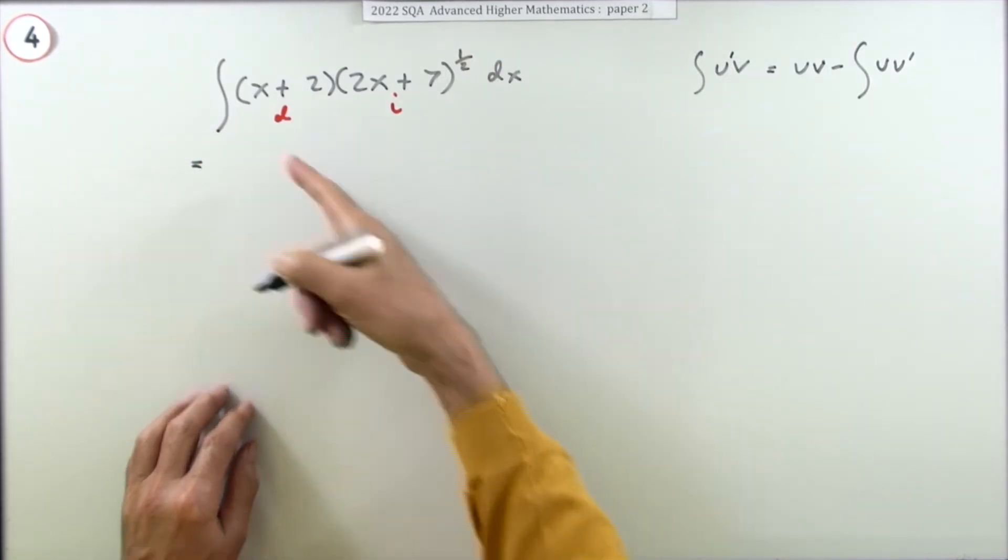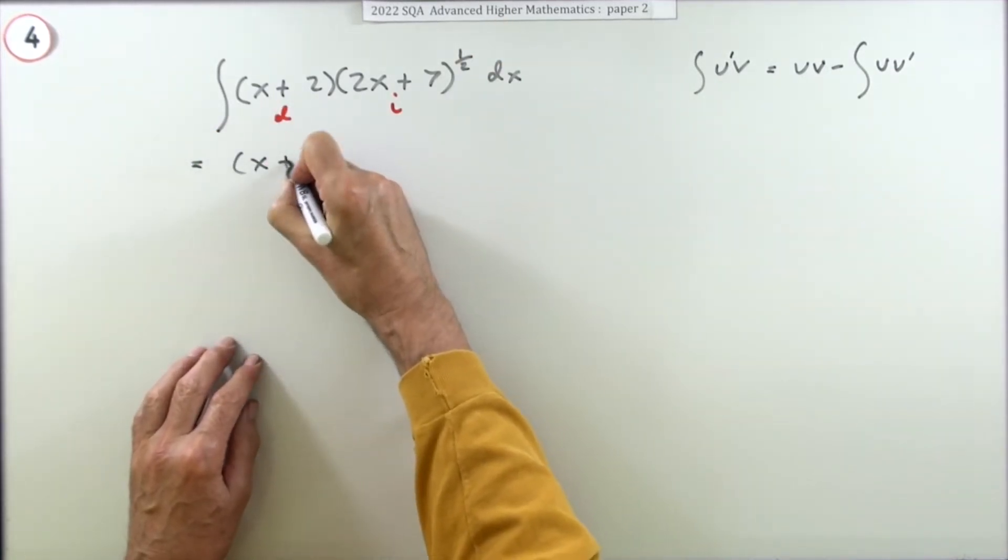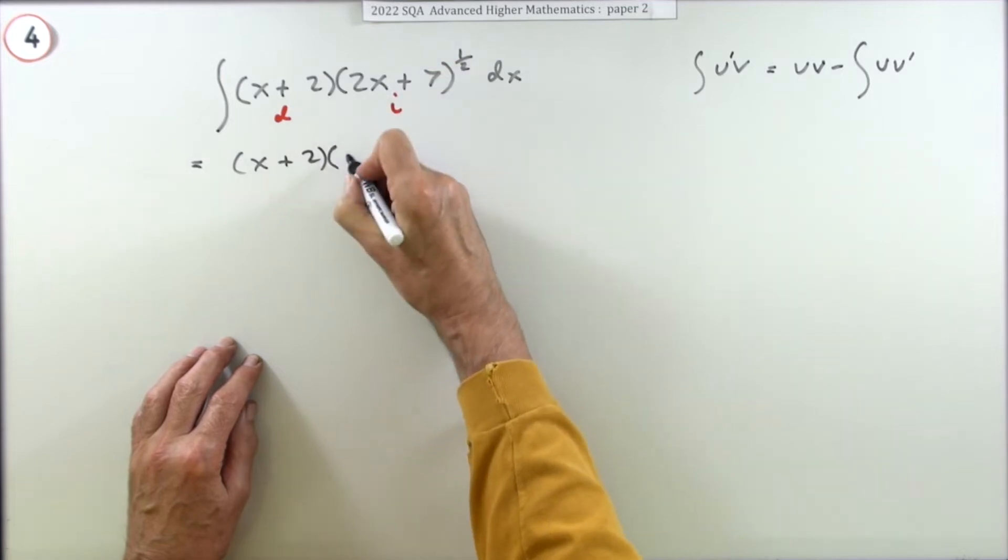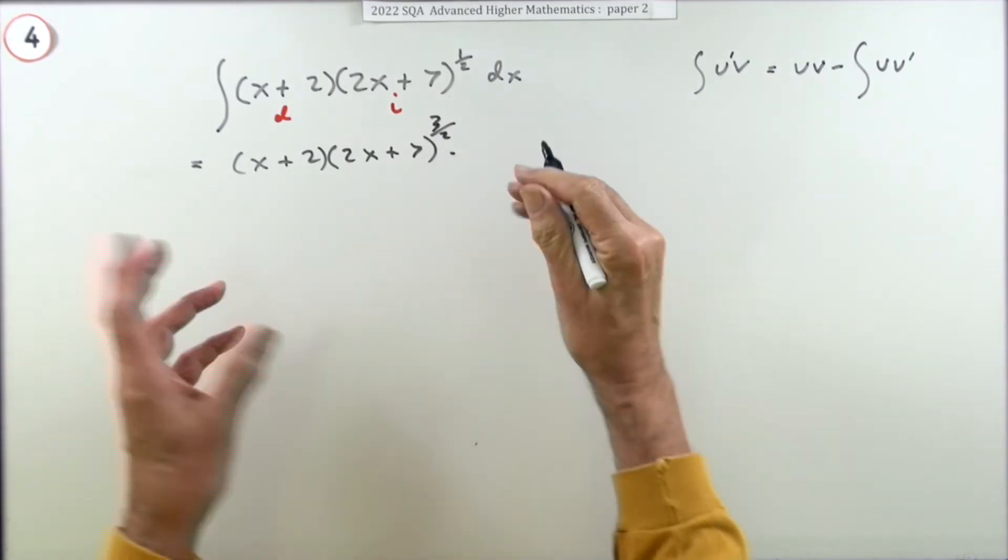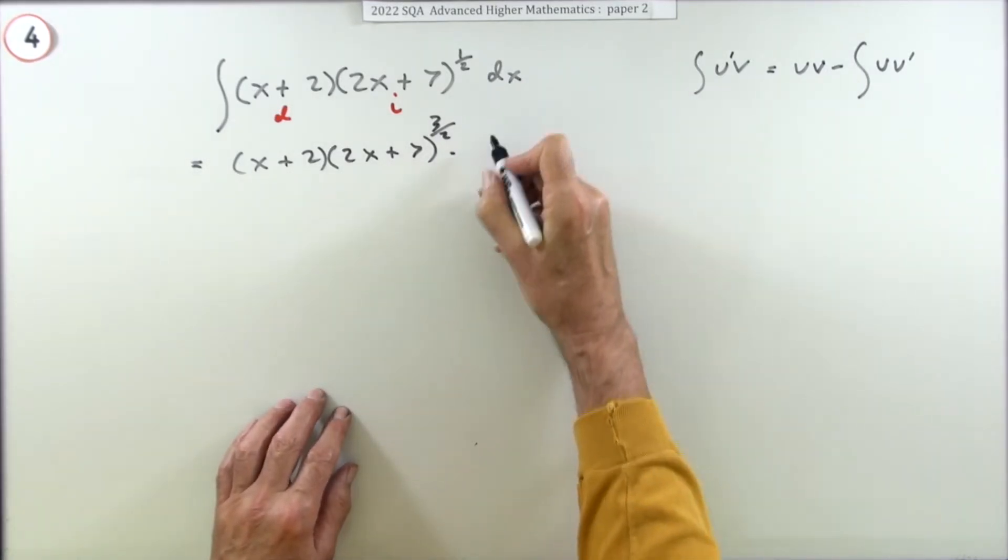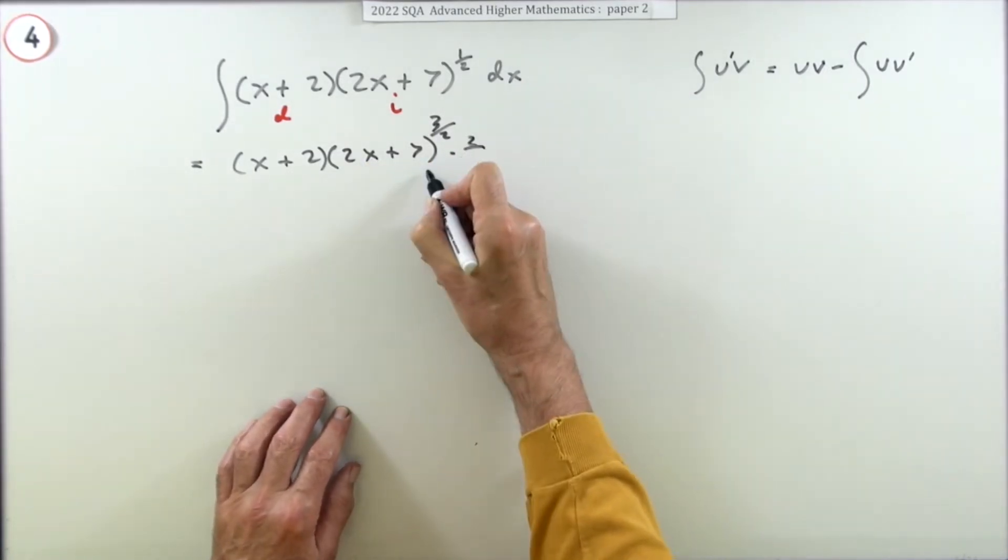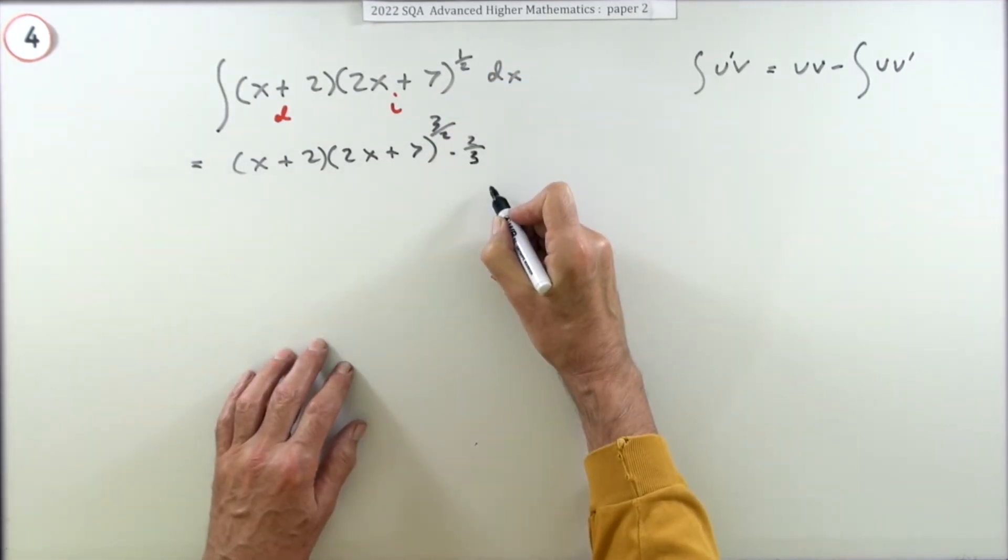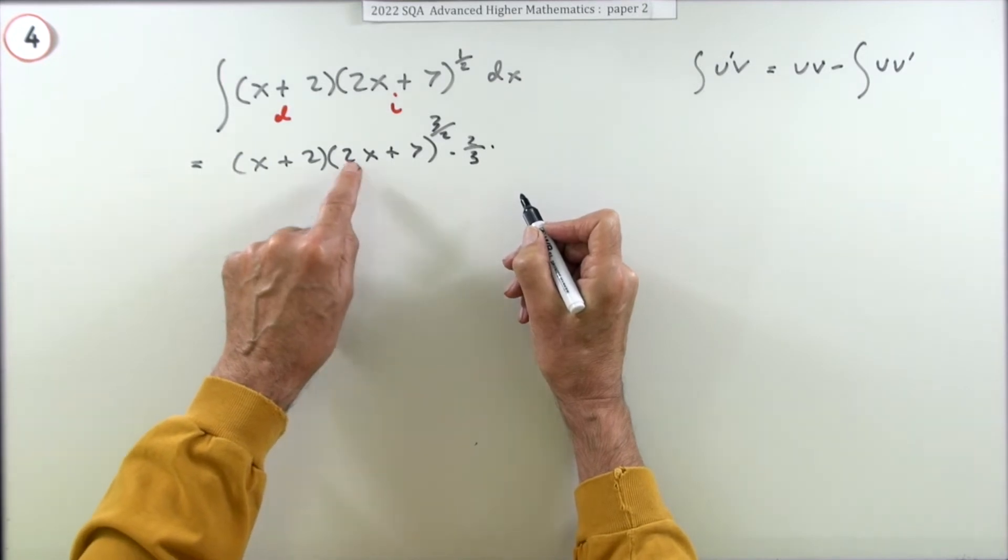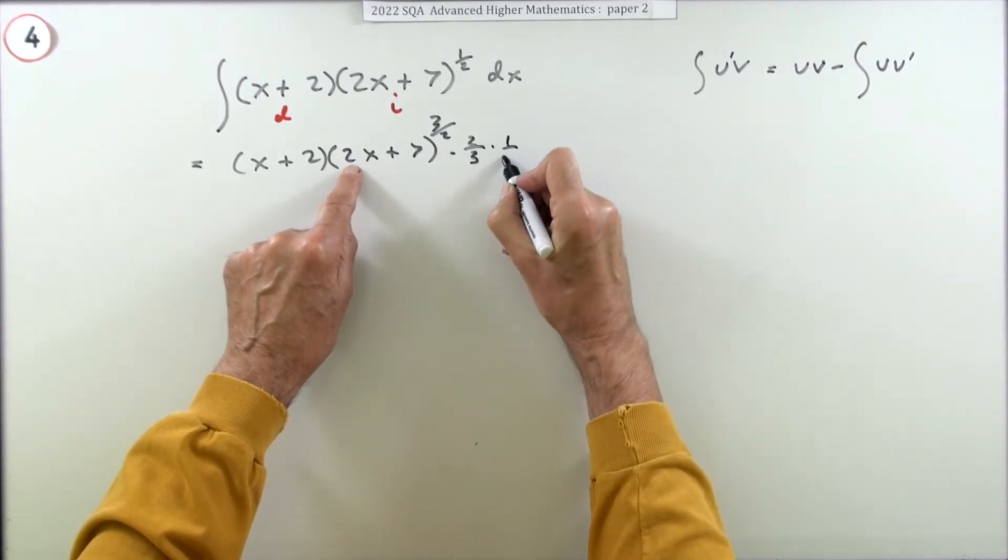So I'll integrate it. So starting it off, integrate first. So leaving that alone, x plus 2, integrating that - well that will just stay the same inside. That pops up to 3 upon 2, but now I've got to do a bit of dividing. Divide by the new power. I don't want to write... you could write it underneath if you want. I'll just flip it upside down, so multiply by 2 upon 3.